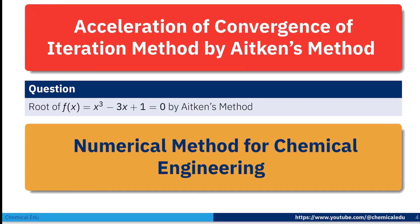Today, I will talk about acceleration of convergence of iteration method by Aitken's method. Here I am going to find root of f(x) = x³ - 3x + 1 = 0 by Aitken's method.